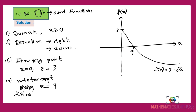The domain of this function is from 0 to infinity, and the range is from negative infinity to 3. We have now finished the square root function.